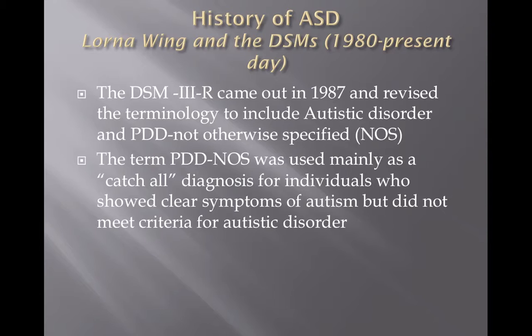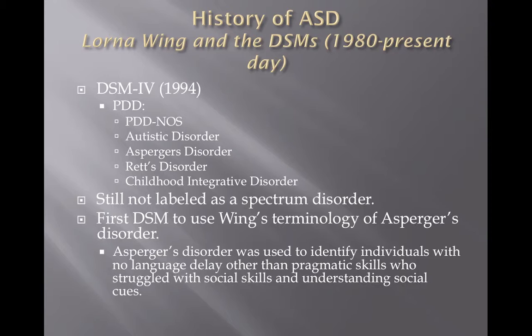The DSM-III-R came out and still had these categories, but it included PDD-NOS, which was pretty much a catch-all diagnosis for individuals who didn't meet criteria for all the other pervasive developmental disorders — essentially a catch-all to help identify all individuals with social impairments. Then in 1994, the DSM-IV came out, and under PDD it still had PDD-NOS and autistic disorder, but it now included Asperger's disorder, due largely to the work of Lorna Wing. Asperger's disorder was used to identify individuals with no language delay other than pragmatic skills who struggled with social skills and understanding social cues. However, the DSM-IV still did not use a spectrum; it still used categories to identify individuals with social impairments.